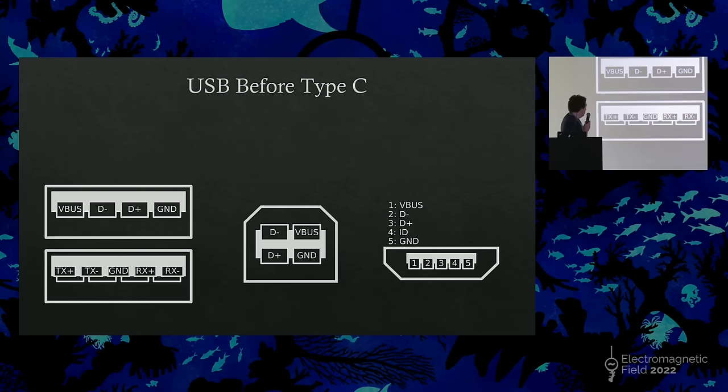And the other thing to note at this stage is USB 3 added an additional two differential data pairs that run at higher speed than the standard differential pairs. So in the A connector they sort of added those on the front. So you just gained an additional five pins in addition to the four previously there.